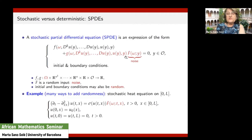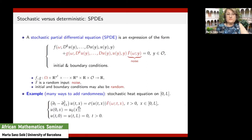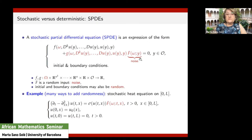This is the general form of an SPDE. As for PDEs, we impose initial and boundary conditions if necessary, and these may also depend on omega — they may also be random. When it comes to examples we can simplify enormously and think for example of the stochastic heat equation. In this example we keep f as in the deterministic case, but for the g term I put sigma of u(t,x) — the variable y is now time and space — with this external random forcing.